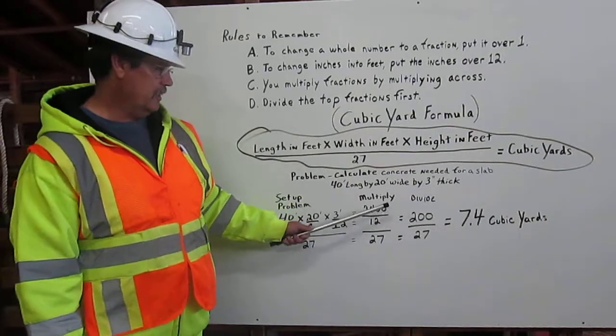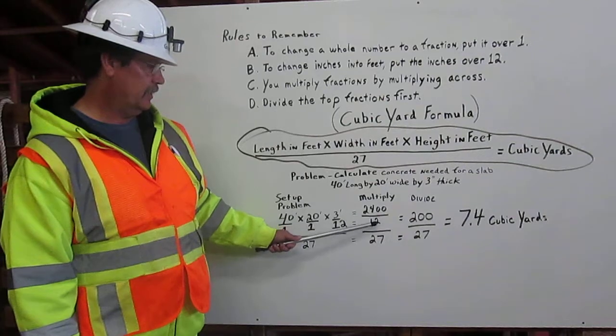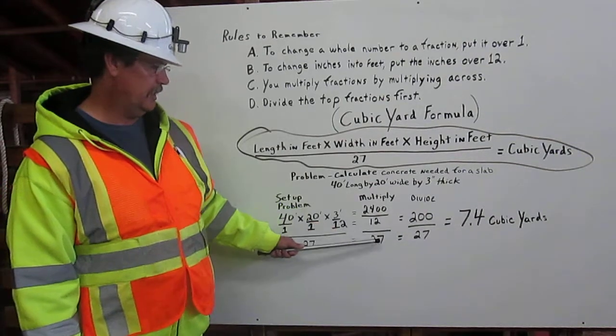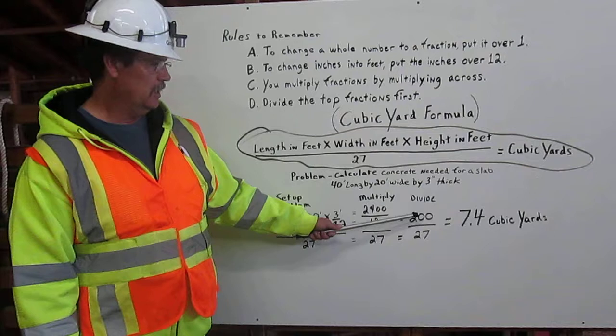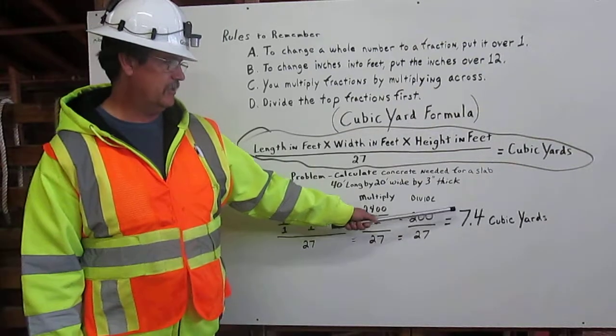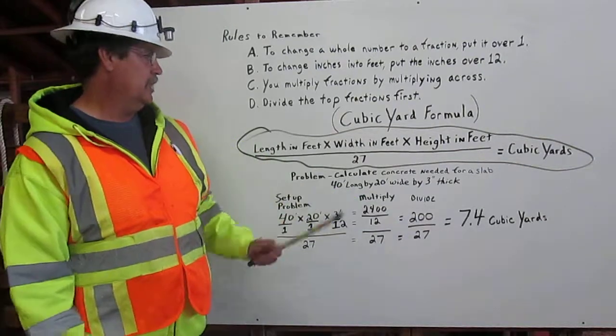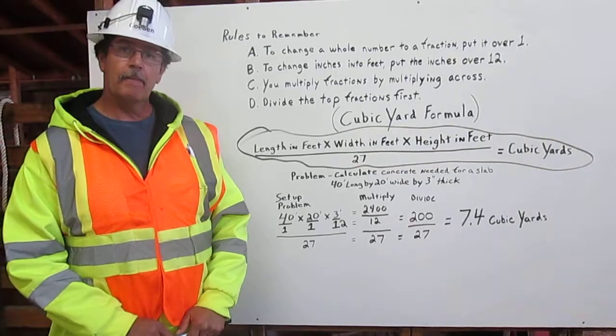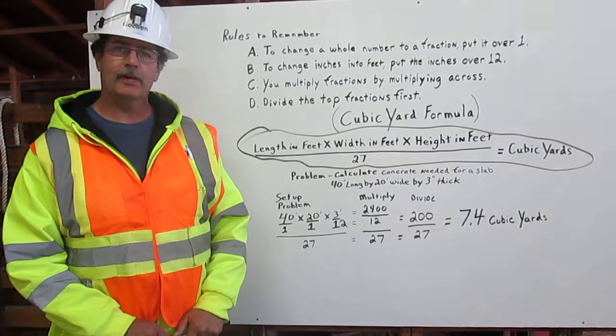You divide the two thousand four hundred by twelve, you get two hundred and you carry the twenty-seven over still. You divide that again, you get seven point four cubic yards for our concrete for the slab. Thank you.